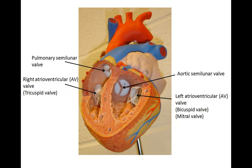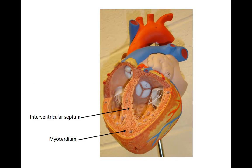The pulmonary semilunar valve, also referred to as just the pulmonary valve, blocks backflow into the right ventricle. The ventricles are separated by a wall called the interventricular septum, which prevents deoxygenated blood in the right ventricle from mixing with oxygenated blood in the left ventricle. The atria are also separated by a wall called the interatrial septum. The heart is a very muscular organ; a thick layer of cardiac muscle called the myocardium makes up the heart wall — myo meaning muscle and cardium referring to the heart.